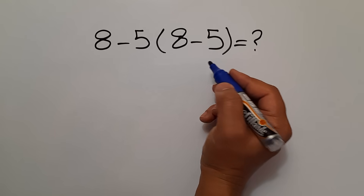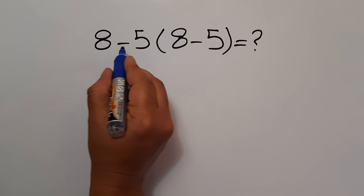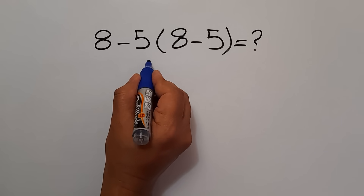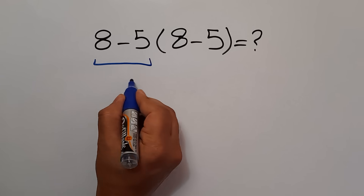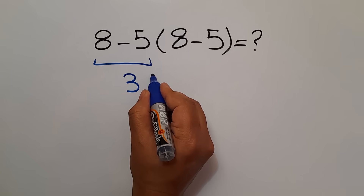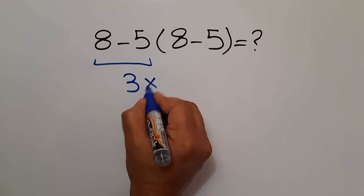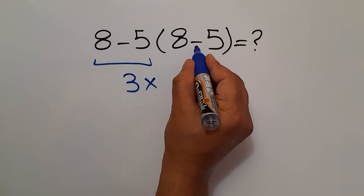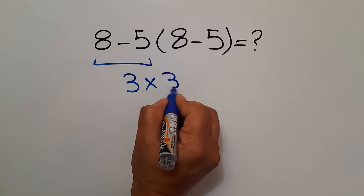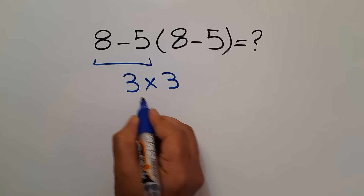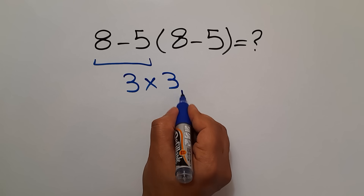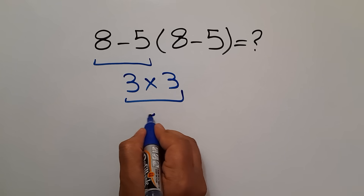Let's go ahead and get started. 8 minus 5 equals 3. And 3 times 8 minus 5 equals 3 again. So, 3 times 3, which equals 9.